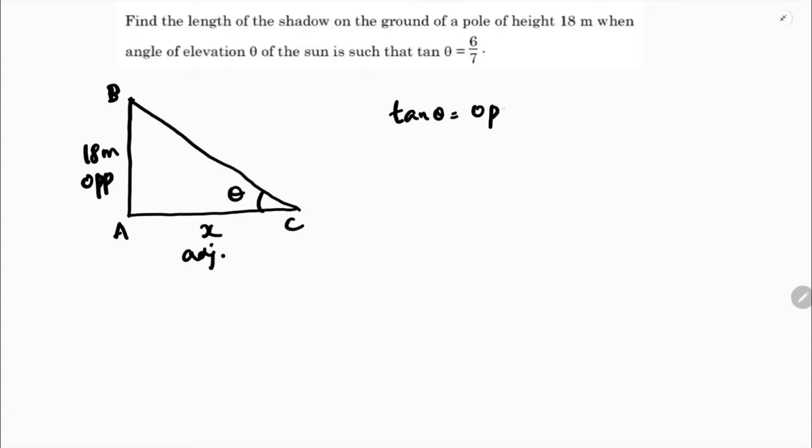Tan theta is opposite by adjacent. Here, tan theta in this case, opposite is AB and adjacent is AC. Tan theta value is given, which is 6 by 7. AB is 18, AC is x.